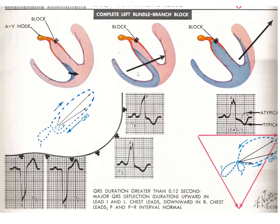In lead V5, it's easier to see the M pattern — up, down, up, down — which looks like an M in leads V5 and V6.